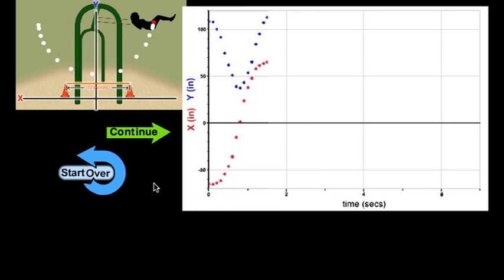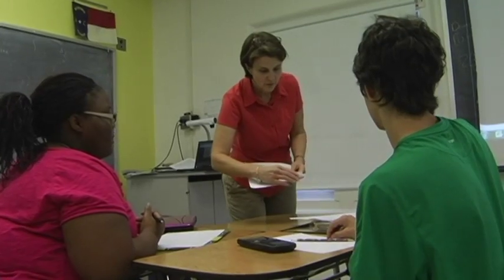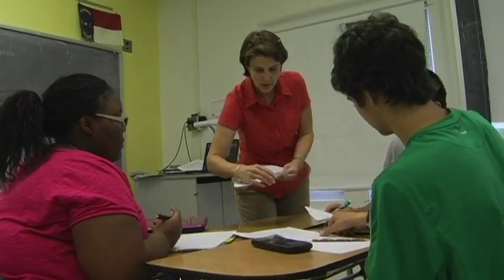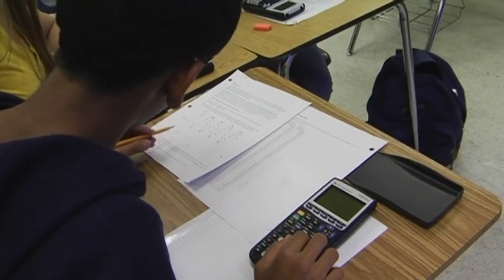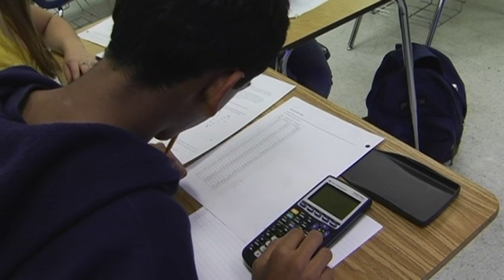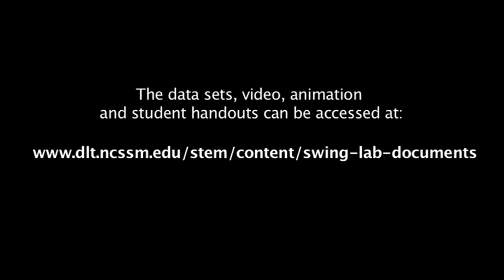Students should watch the video of the swinger and the animation as many times as needed. When they are ready, it is time to work through the questions on the student handout lab sheet. They will need access to the actual data points for the vertical and horizontal position of the swinger. The data is provided in two Excel files, one for vertical and one for horizontal, or TI-83/84 data sets. A partial data set is also provided at the end of the student handout.